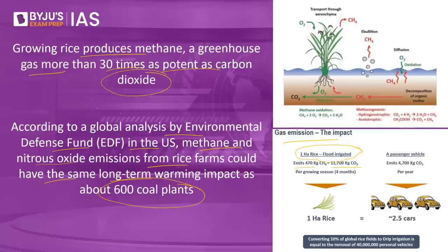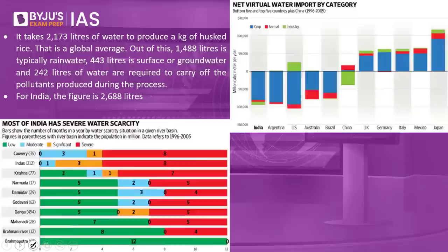This is equivalent to about 4,700 kg of carbon dioxide released from vehicles. So this acts as a significant greenhouse gas, and the larger the production of rice, the more methane and greenhouse gases are generated.